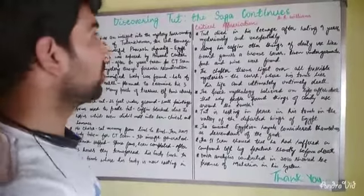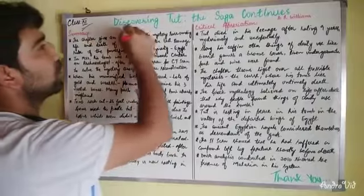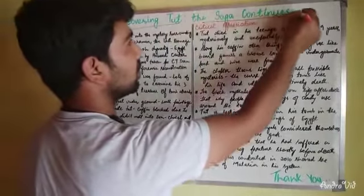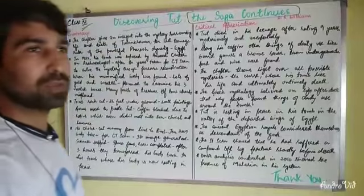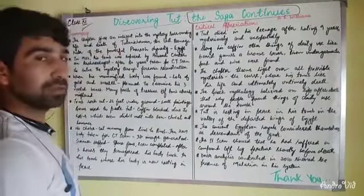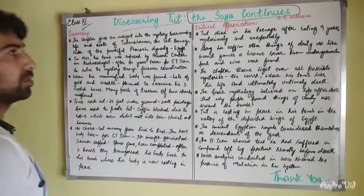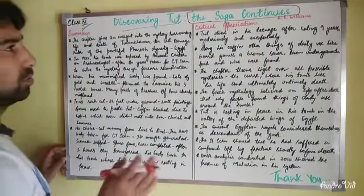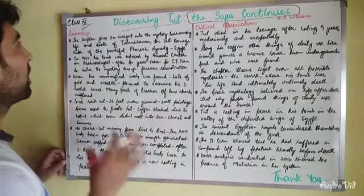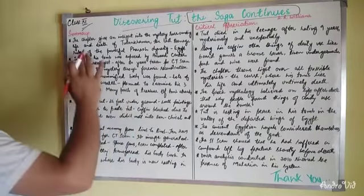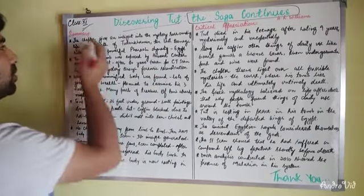Hello friends, welcome back to this chapter of Class 11th — 'Discovering Tut: The Saga Continues.' This chapter is about history, about Egyptians, Egyptian mythology — so it will relate to history, mythology, and different things. I have made two parts: summary and critical appreciation. We will go through the summary first.